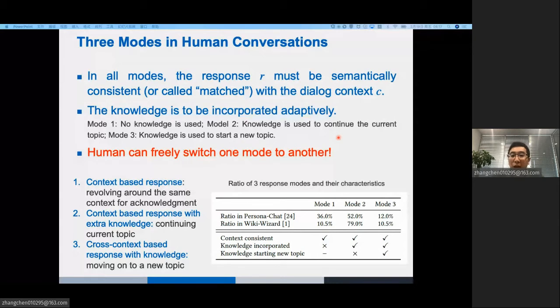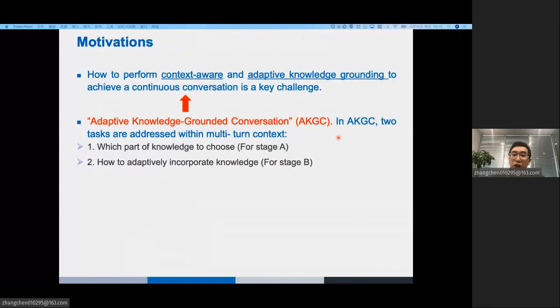Third, the knowledge is to be used adaptively. In mode 2, the knowledge is used to continue the current topic. But the knowledge in mode 3 is introduced to start a new topic. Last, humans can freely switch one mode to another based on current context and knowledge. Therefore, there is a challenge. How do you perform context-aware and adaptive knowledge grounding to achieve a continuous conversation?